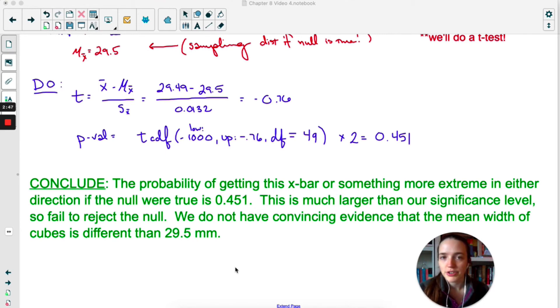So very similar to the significance test for proportions. But with means, just remember, if you know sigma, you can use a z-test. If you don't know sigma, which is much more likely, use a t-test. If only I could remind my past self to do that.